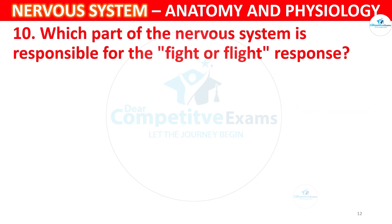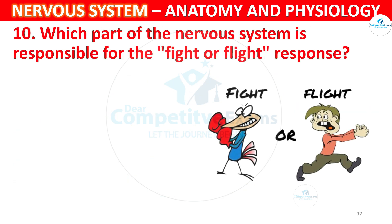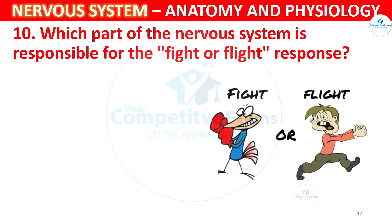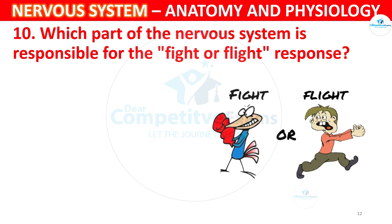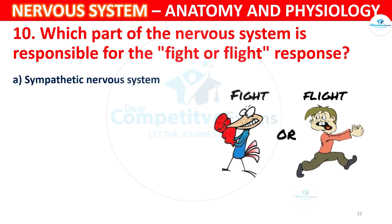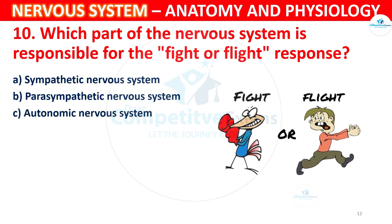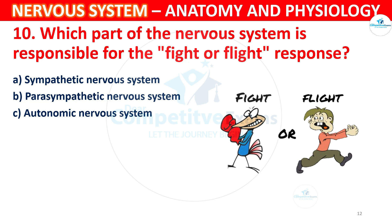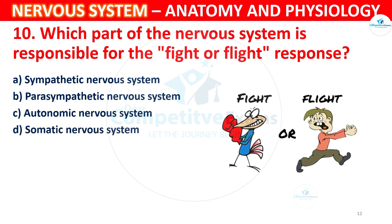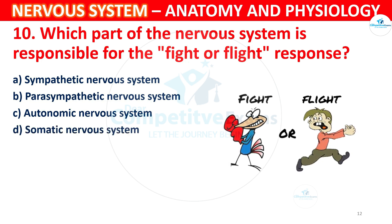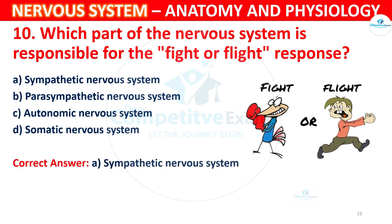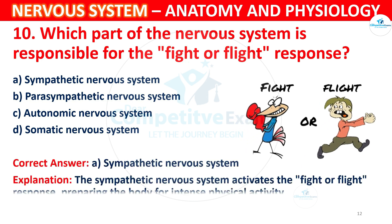Question 10: Which part of the nervous system is responsible for the fight-or-flight response? Options: A) Sympathetic nervous system, B) Parasympathetic nervous system, C) Autonomic nervous system, D) Somatic nervous system. The correct answer is A, Sympathetic nervous system. The sympathetic nervous system activates the fight-or-flight response, preparing the body for intense physical activity.